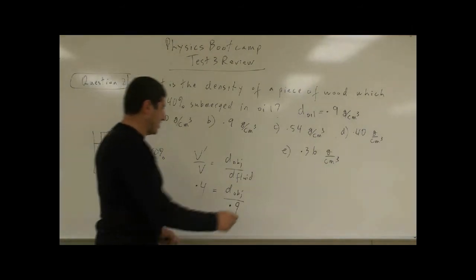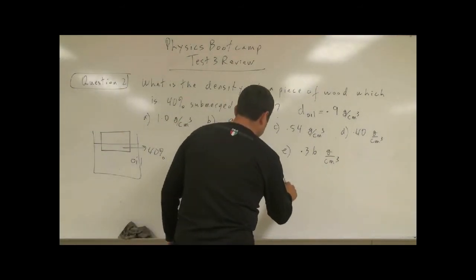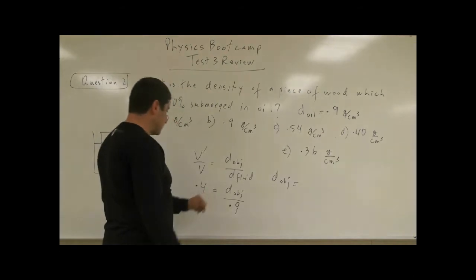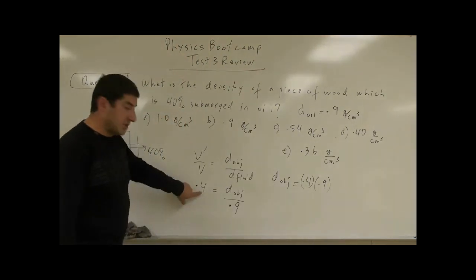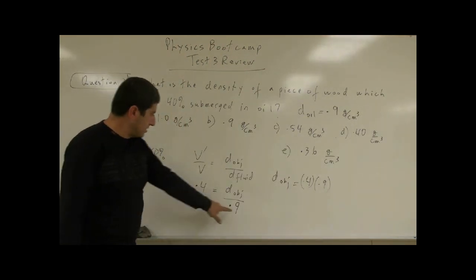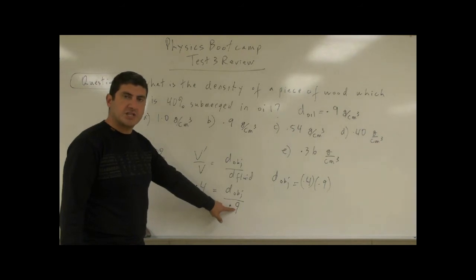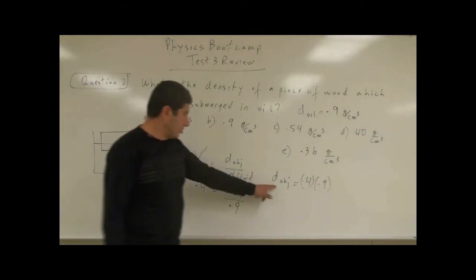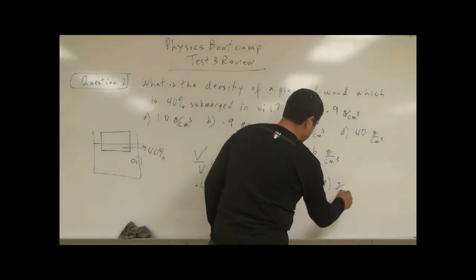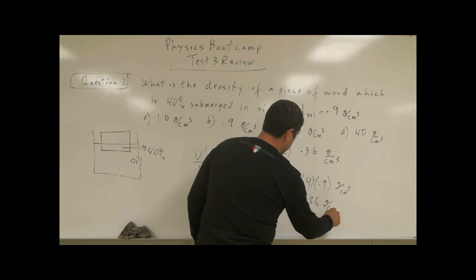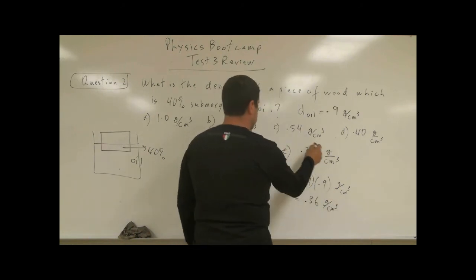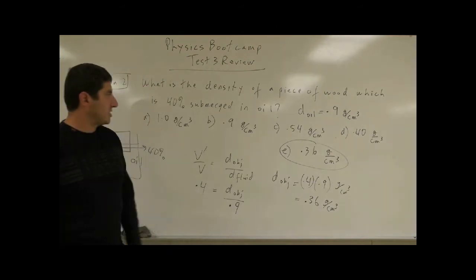So if you have density of the object, it's going to be 0.9 times 0.4. And the units of it, well, this one is unitless because it's the ratio of two volumes. This one has units of gram per cubic centimeters, right? So the unit of this is going to be gram per cubic centimeter. So what is that? 0.36 gram per cubic centimeter. So the answer is E.